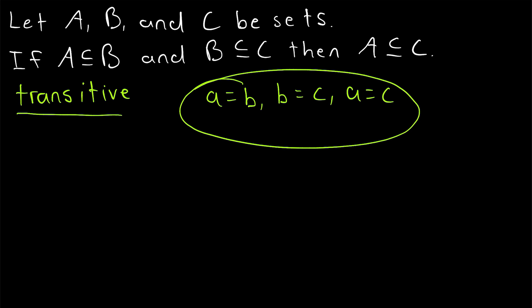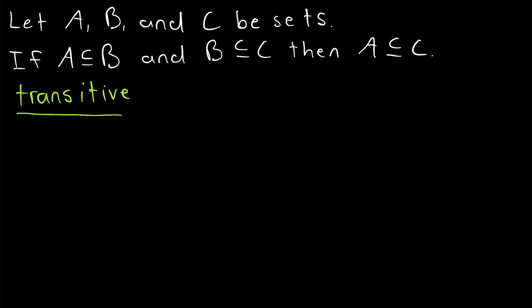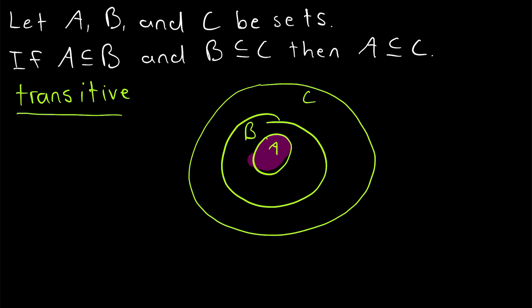When we talk about transitivity with regards to equality, it seems pretty clear, and it should be pretty clear for subsets as well. If some set A is a subset of another set B, so A is entirely contained within B, and the set B is a subset of some set C, so B is entirely contained within C, then clearly the set A is going to have to be entirely contained within the set C.